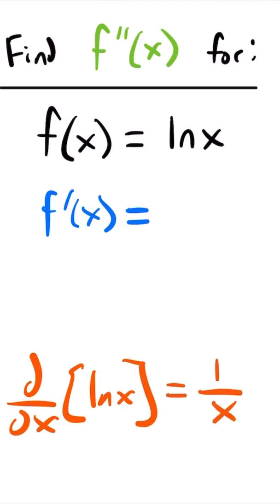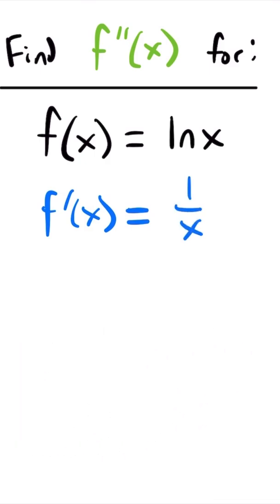And so in this case, the first derivative will be equal to 1 divided by x. And then what we can do is take the derivative of that first derivative to find the second derivative.